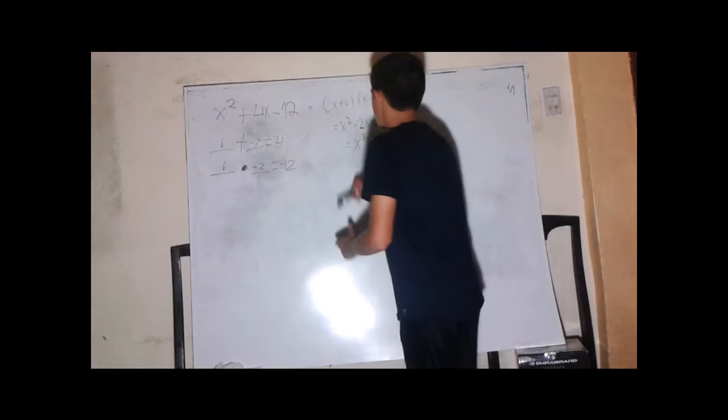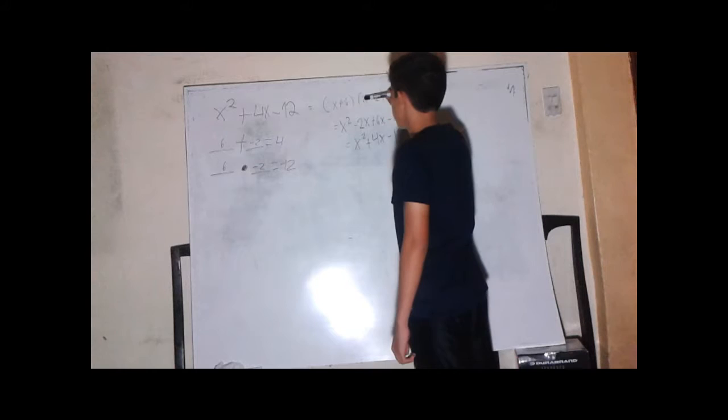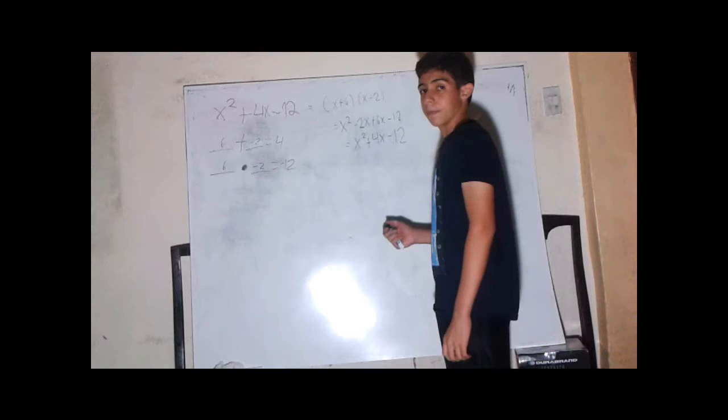Once we have these two numbers, we copy them here. We first copy the x and the first term, which is 6. Then we also copy the x and the second term, which is negative 2.